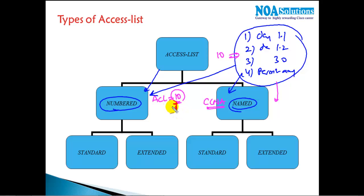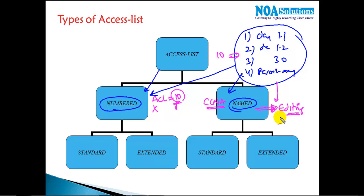If I give a number for identification, we call it a numbered ACL; if I give a name, we call it a named ACL. One more major difference is that in named ACLs, editing is possible, which is not possible in numbered ACLs. Except for that difference, they are the same.